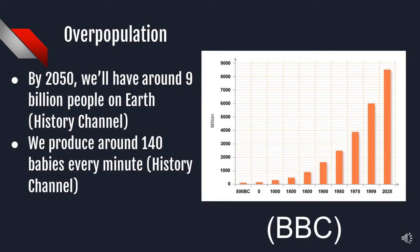According to the History Channel, 200,000 babies are born every day, or around 140 babies every minute. That's enough to fill more than two full football stadiums. At our current rate of reproduction, we are dooming the human race. This graph on the side also shows the extreme escalation of our population and predicted populations.